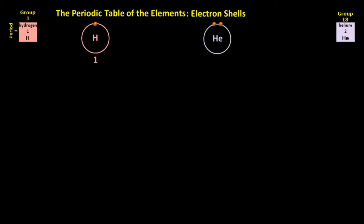A helium atom also has only one shell, but there are two electrons in it. Its electron configuration is two, and the shell is now full.